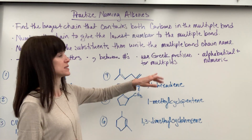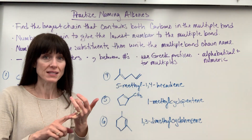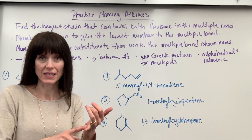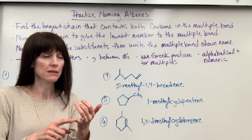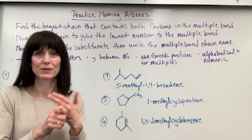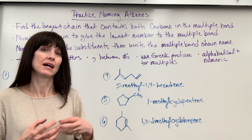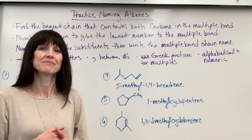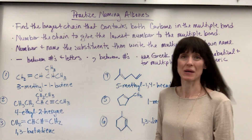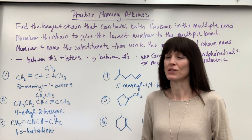On the Greek prefixes: that applies to the ending E-N-E. If you have two alkenes, the ending is E-N-E. It also applies if we have multiple substituents — like two methyl groups would be dimethyl. Let's look at six examples I have here, and I hope these answer your questions.